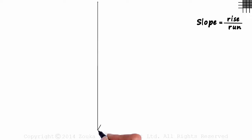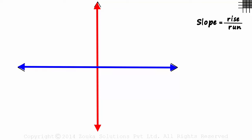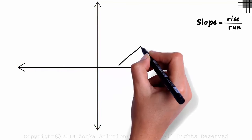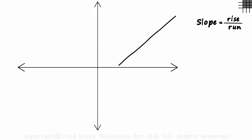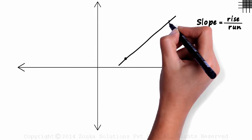To understand this, let's draw the coordinate plane. It has the y and the x axis. How do we find the slope of this line? To find the slope, we just have to pick any two points on the line.